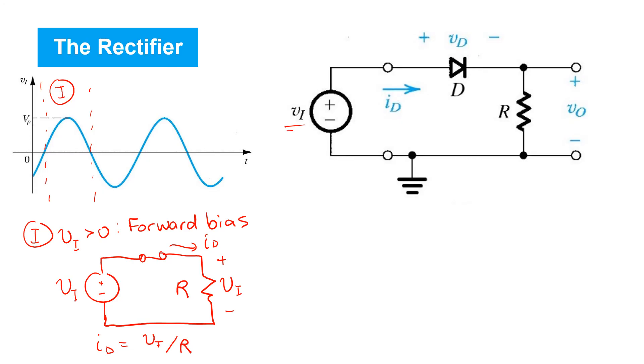The second case of interest arises when vi is less than zero. In this case, the circuit looks very much like the example we just considered with reverse bias.